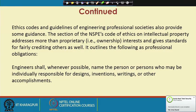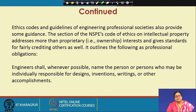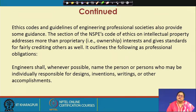Regarding the case of the surgeons, we need to follow some codes and guidelines. Ethics codes and guidelines of engineering professional societies also provide guidance on this. The section of the NSP Code of Ethics on intellectual property addresses more than proprietary interest and gives standards for fairly crediting others as well. It outlines the following as professional obligations: engineers shall, whenever possible, name the person or persons who may be individually responsible for designs, inventions, writings, or other accomplishments.